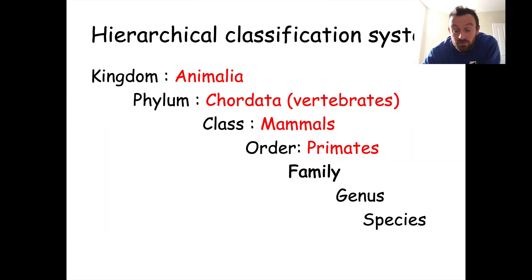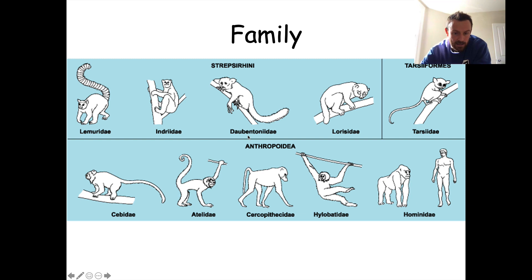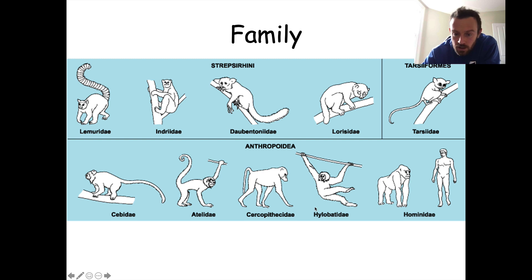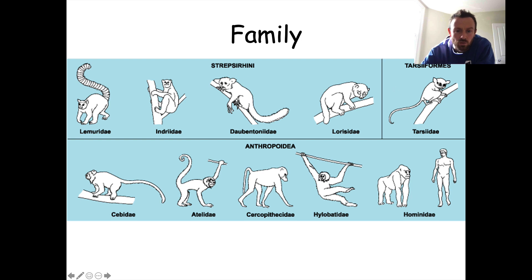Within the primate order there are many different families. The least known about are the lemurs, indris, and Daubentoniidae, which are found mainly on the island of Madagascar. We've got the older New World monkeys, and then we have the apes. Apes and humans are actually in the same family — the great apes and humans. There are also tarsiers, which are very cool animals and one of the only insect-eating primates. Google those two animals if you want to see some cool primates.